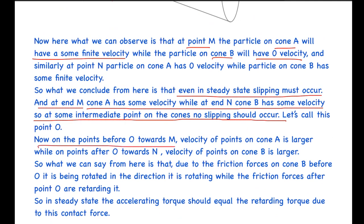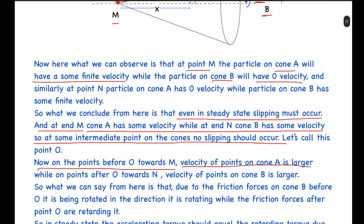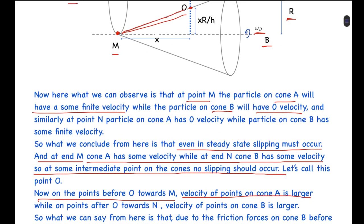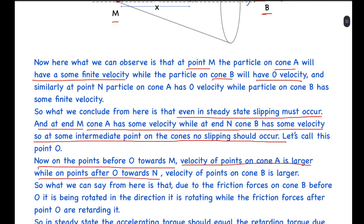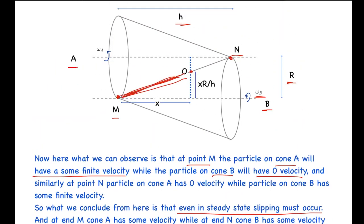On points before O towards M, the velocity of the point on cone A is larger than that of cone B. On points after O towards N, the velocity of the point on cone B is larger. Therefore, due to friction forces on cone B, before O it is being accelerated in the direction it is rotating, while friction forces after point O are retarding it.